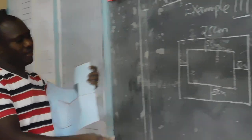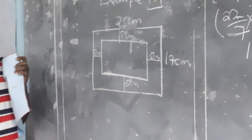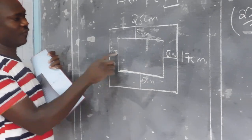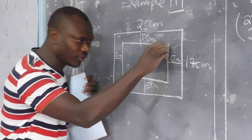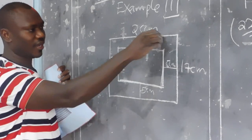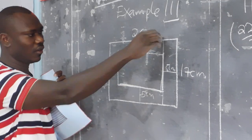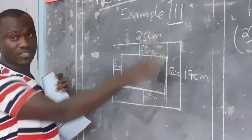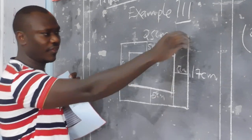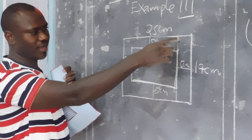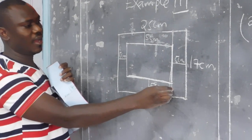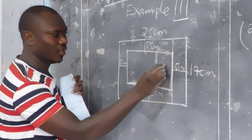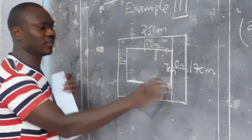We start by finding the width of the inner rectangle. The margin on each side is 5 cm. If we connect the sides, the whole line gives us 17 cm because opposite sides of a rectangle are equal. Part of that 17 is 5 on each side, giving 10, so from 17 we subtract 10 and remain with 7 cm as the width of the inner rectangle.